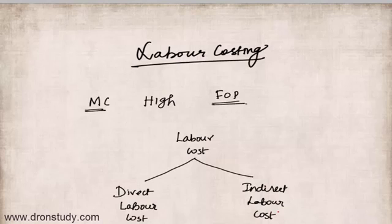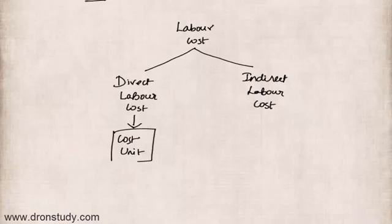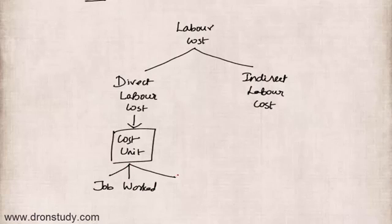Direct labor cost is the cost that is incurred on the production of a product and it can be easily identified and allocated to a cost unit — that is, to a specific job, a specific work order, or a specific unit of a product. Direct cost is something which can be easily identified and allocated to a cost unit.